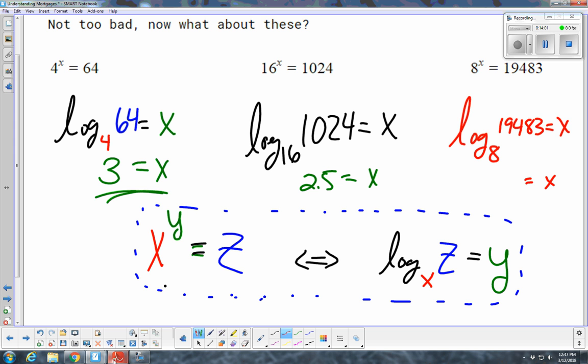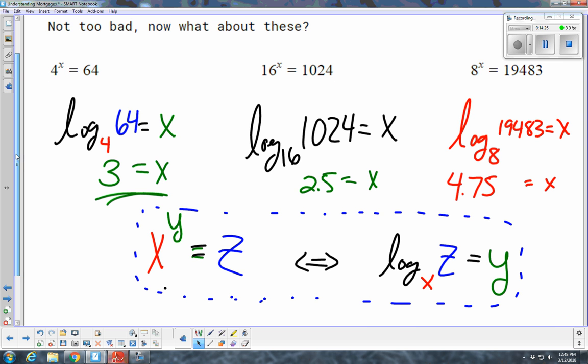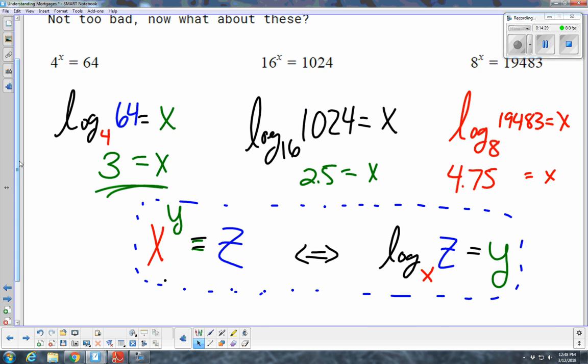I think that's what I tried to make it, so that sounds about right. So, there you go. So, that means if you take 8 to the 4.75 power, you should get 19,483. So, that's how you do that. Let's talk about these real quick, and then we'll get moving. And we'll be done.